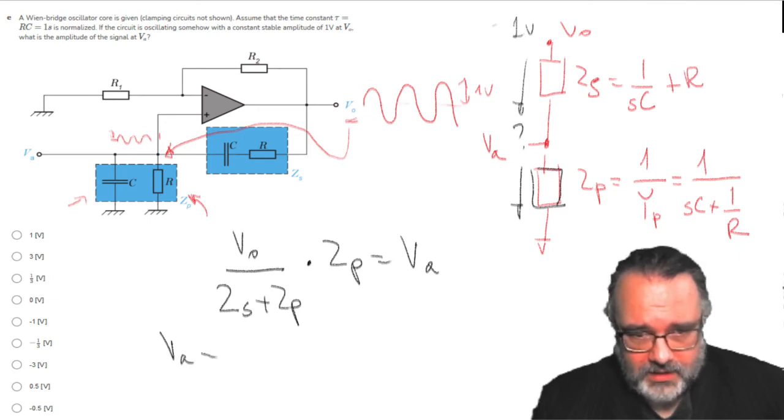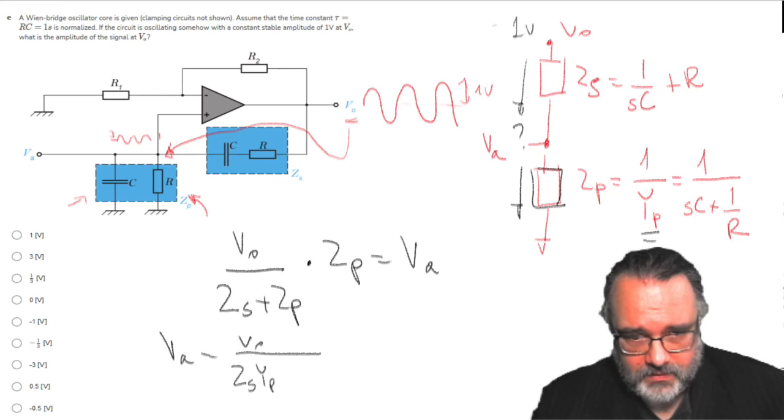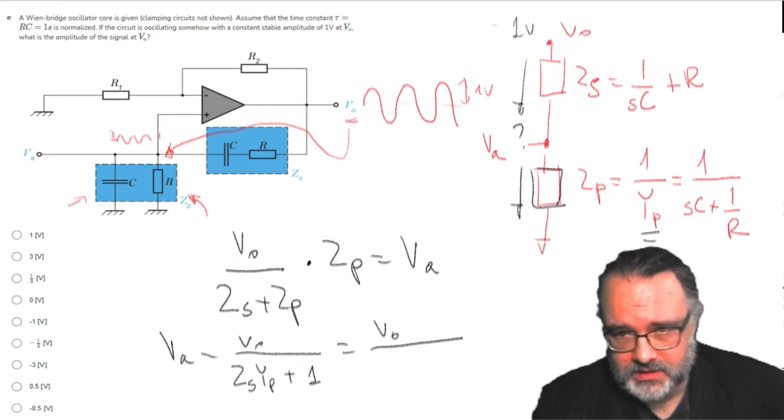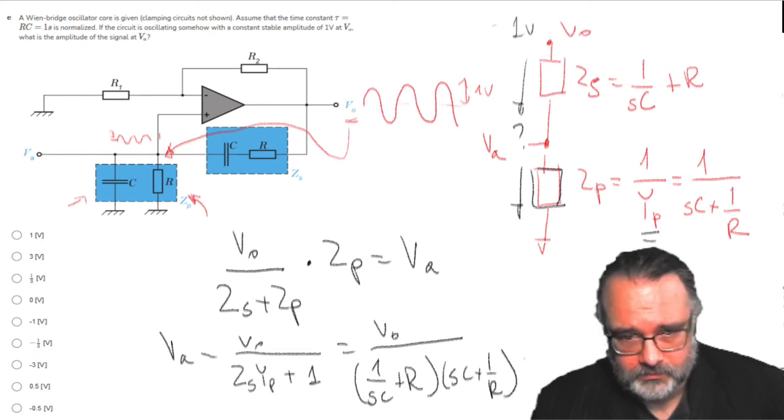Then Va is Vout, 1 over Zp is Yp. Which means that I can do Zs Yp plus, and this is 1. Then Zs is simply this: 1 over Sc plus R times Yp is this thing, plus 1.